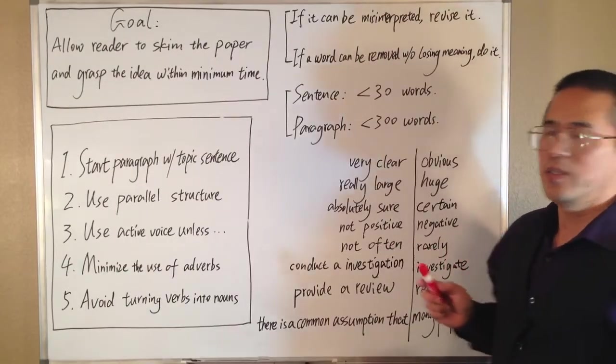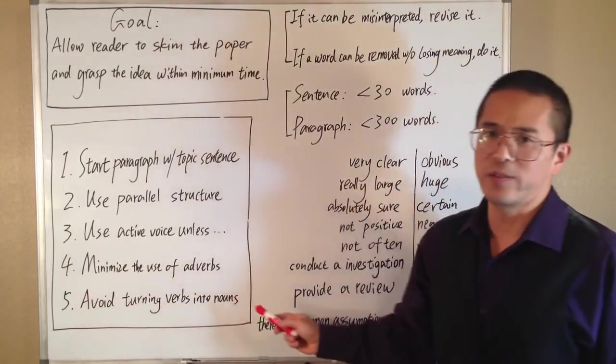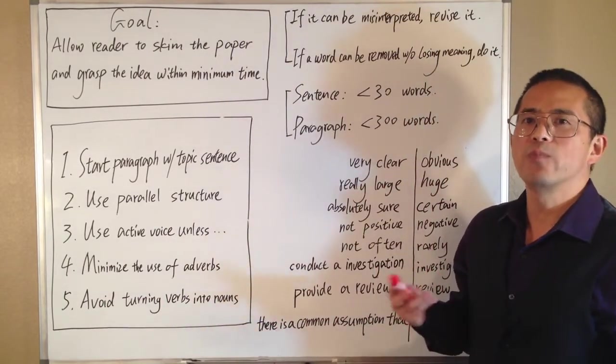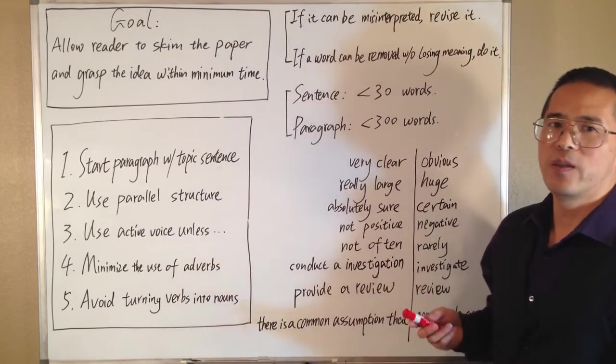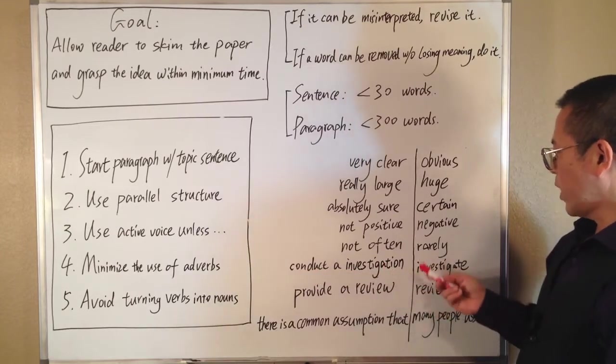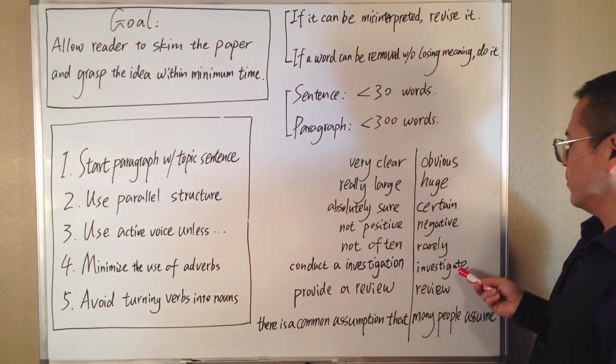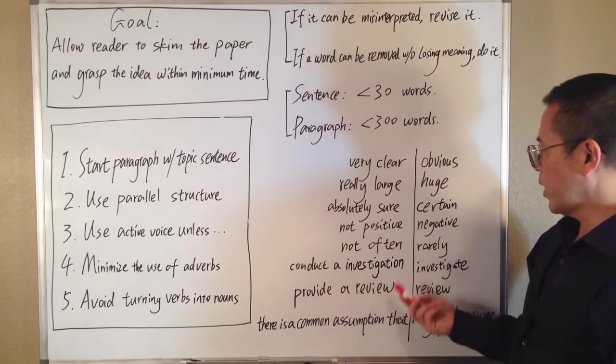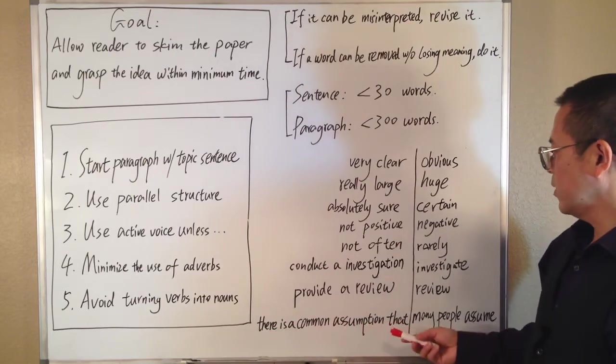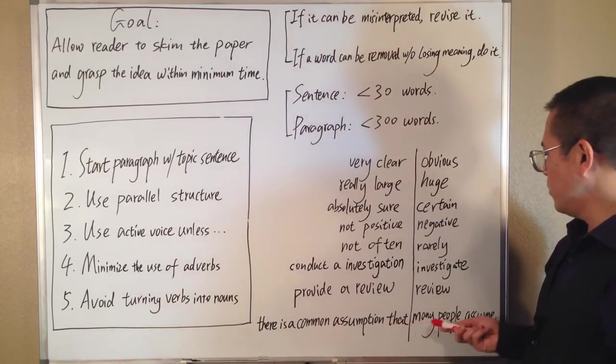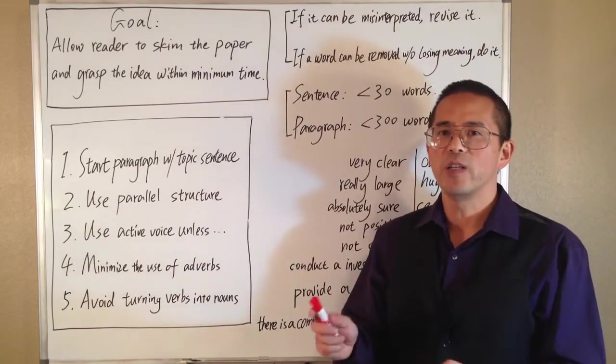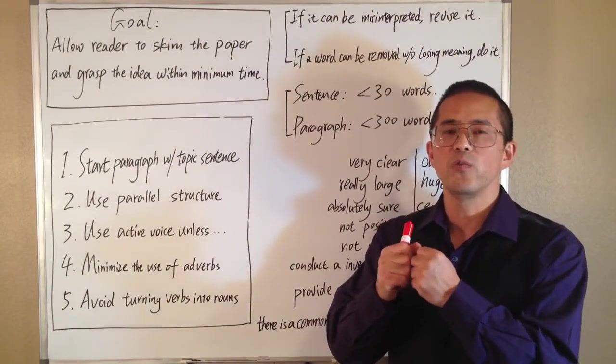The fifth tip is to avoid turning verbs into nouns. Verbs are generally less wordy, more clear and powerful, and they can move the writing along more quickly. For example, instead of conduct an investigation, we'd rather say investigate. Instead of provide a review, we'd rather say review. Instead of there is a common assumption that, we'd rather say many people assume. Also, to maximize clarity, the subject and the verb should be put next to each other whenever it is possible.